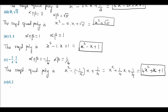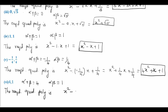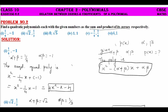In the sixth subdivision, alpha plus beta = 4 and alpha into beta = 1. Therefore, the required quadratic polynomial is X square − 4X + 1. So this is the required polynomial whose sum of roots is 4 and product of zeros is 1. This is how we find the quadratic polynomials given the sum and product of their zeros.